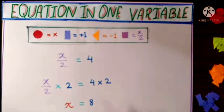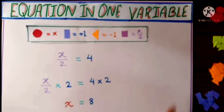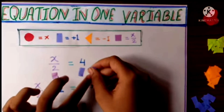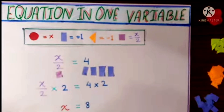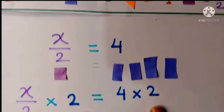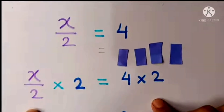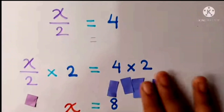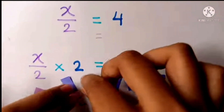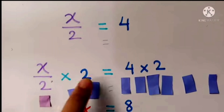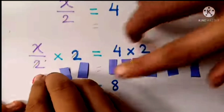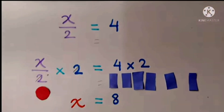Here is our last equation — fraction: x by 2 equal to 4. So here is our x by 2 equals to 4. Let's keep 4 here. The denominator is 2, so on both sides LHS and RHS we will multiply by 2. So here is our x by 2, and 4 into 2 on the other side. Here also we will multiply by 2. So here 2 and 2 will be cut, and here we will remain x. Let's remove this and keep our x here.